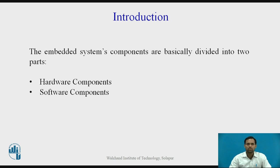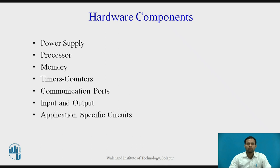Introduction. The Embedded System components are basically divided into two parts: hardware components and software components. As an Embedded System is a combination of hardware and software, its components are divided into these two parts. First, we will see the hardware components of Embedded System.